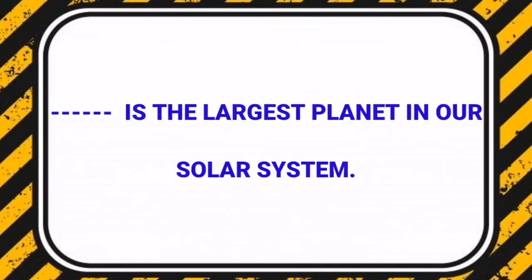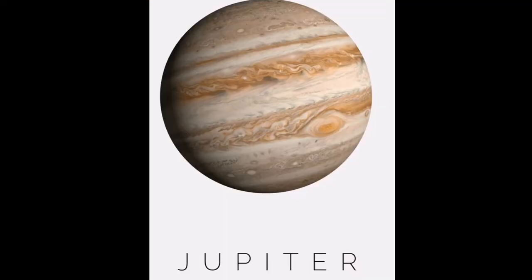Next. Dash is the largest planet in our solar system. Eetavum valia Grahaeng ethan. Answer: Jupiter.